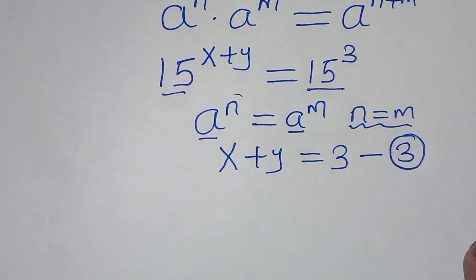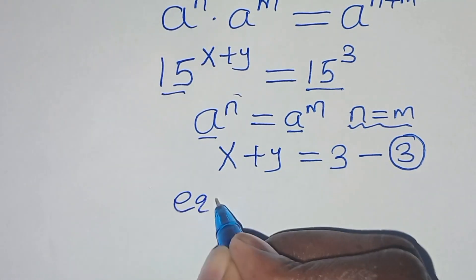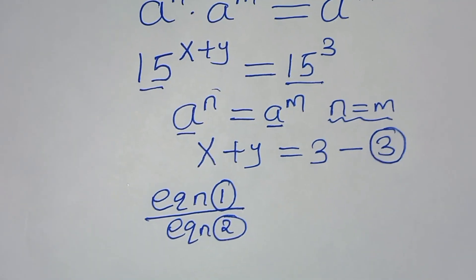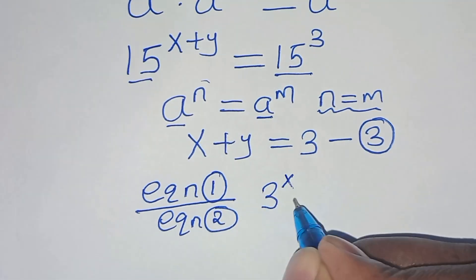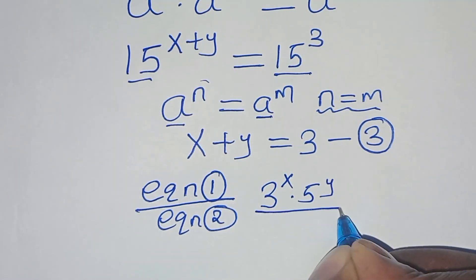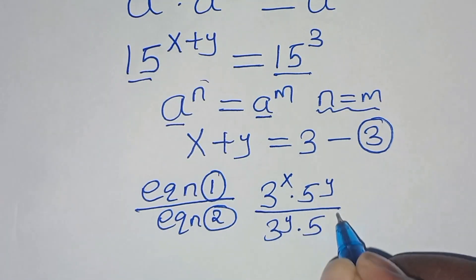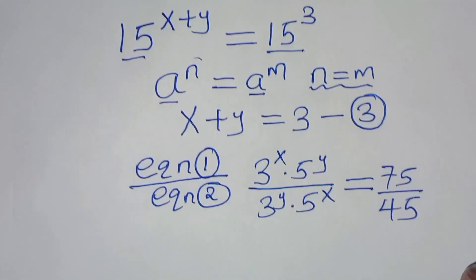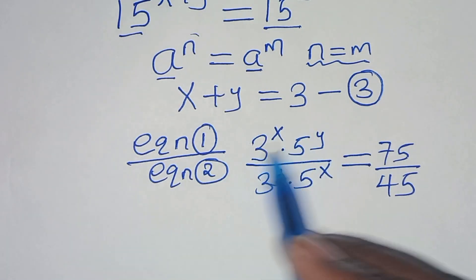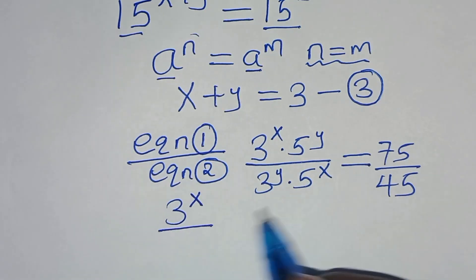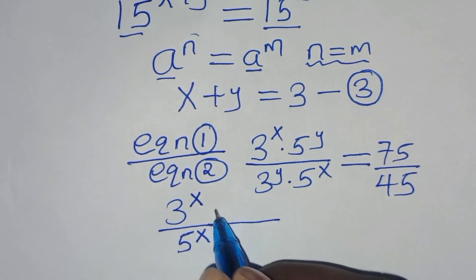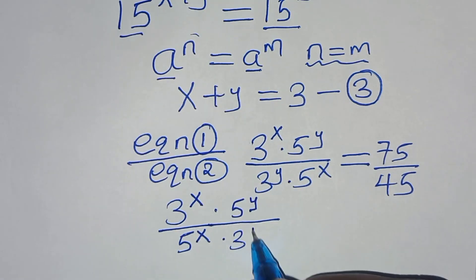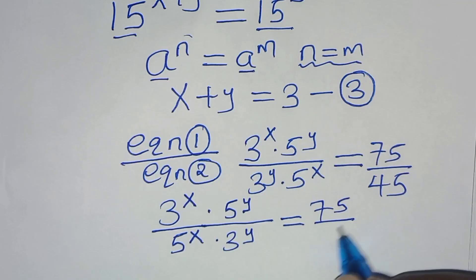Now, the next step is to divide equation 1 by equation 2. So this implies that we have 3 to the power of x times 5 to the power of y, divided by 3 to the power of y times 5 to the power of x. In the numerator we have 3 to the power of x and 5 to the power of y; in the denominator we have 5 to the power of x and 3 to the power of y, this is equal to 75 over 45.